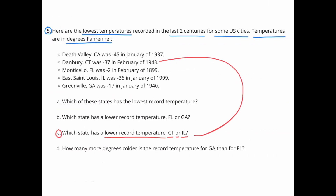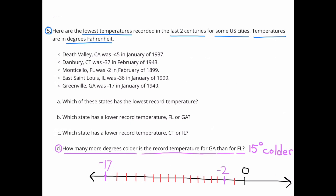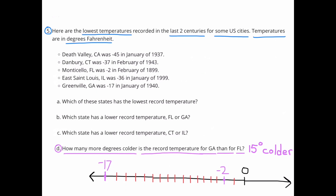C: Which state has a lower record temperature, Connecticut or Illinois? Connecticut's lowest temperature is negative 37, and Illinois's lowest is negative 36. Connecticut has the lower temperature, as negative 37 is further below zero than negative 36. D: How many more degrees colder is the record temperature for Georgia than for Florida? Using a number line: zero is on the right, negative 2 represents Florida's lowest temperature, and 15 degrees to the left is negative 17, representing Georgia's coldest temperature. There are 15 degrees between negative 2 and negative 17.